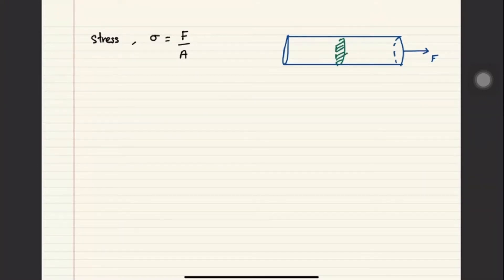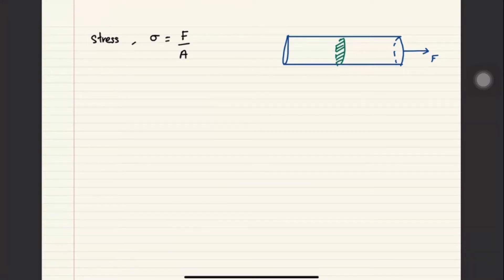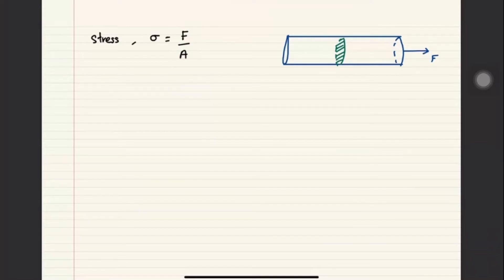The ratio between the force and the area is what we call stress. The unit would be kg·m⁻¹·s⁻², which comes from mass times acceleration over area, or force in Newtons over area in meters squared. So you have Newton per meter squared, or alternatively we normally use Pascal — basically the same unit.